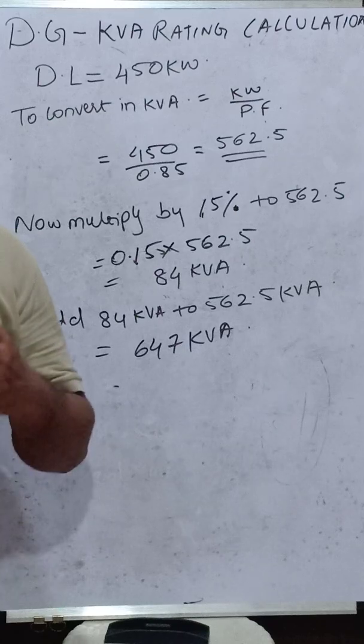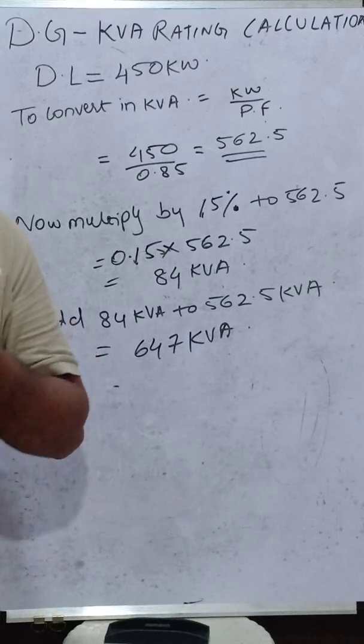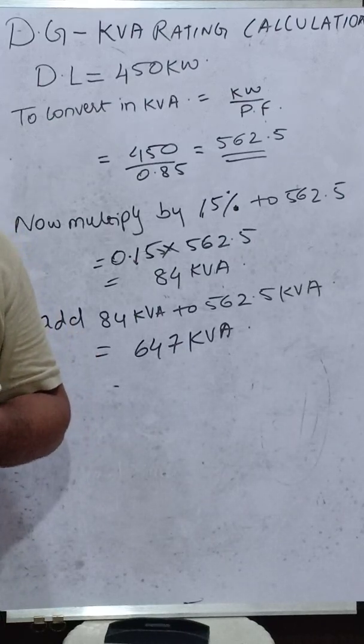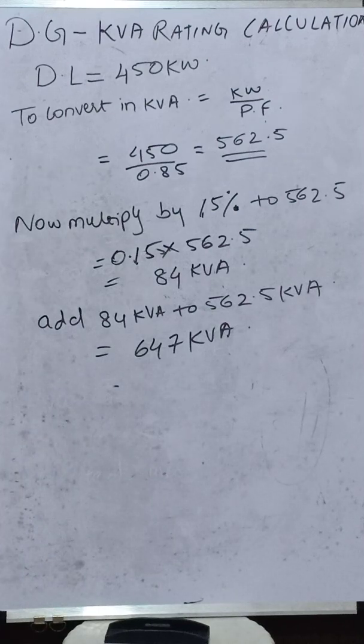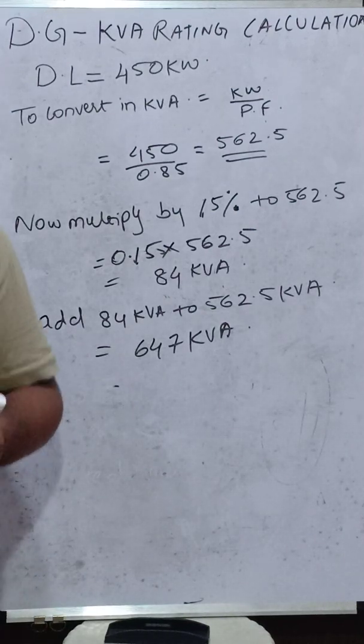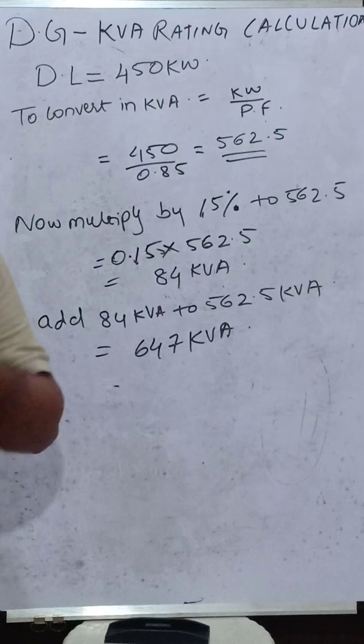Then I have explained how to summarize the total electrical load that is present in the residential building. Based on that, we have considered a demand load of 450 kW to calculate the transformer size.